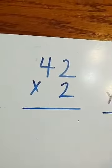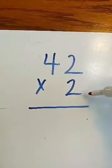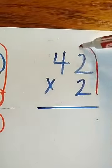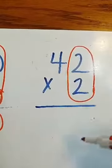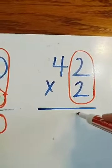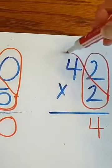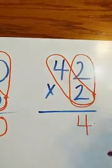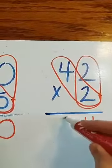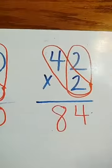No 0s in this one, but we're going to do it the same as I just showed you. First, we're going to multiply our 1s place. 2 times 2 is 4. And then we multiply times our 10s place. 4 times 2 is 8. And we've got our answer.